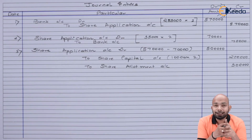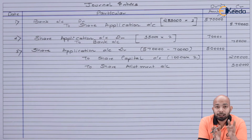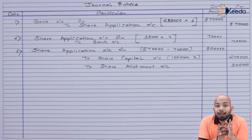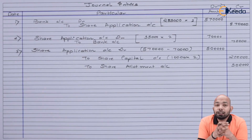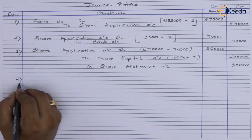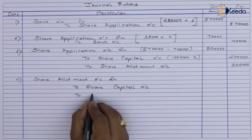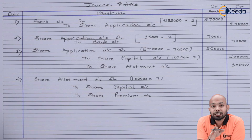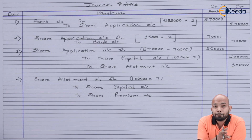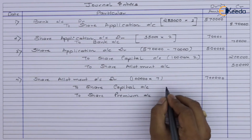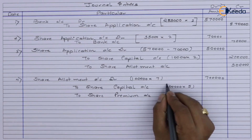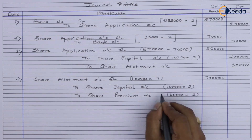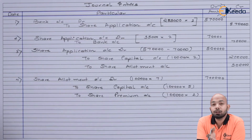For allotment, if we're expecting ₹10,00,000 we'll receive only ₹7,00,000 after adjusting the ₹3,00,000 already received — any calls in arrears will further reduce this. Now for share allotment, we deal with 1 lakh shares: 1,00,000 × ₹7 = ₹7,00,000. Share Capital = 1,00,000 × ₹5 = ₹5,00,000, and Securities Premium = ₹2,00,000.